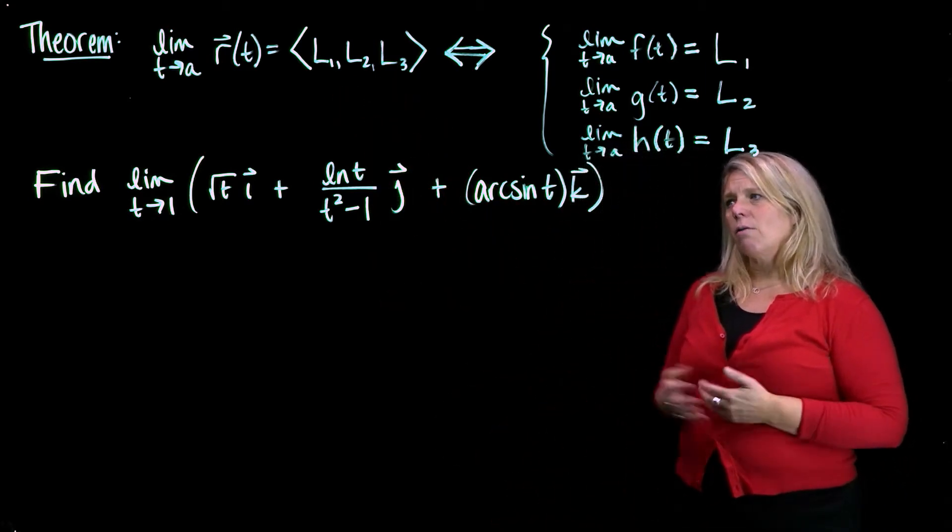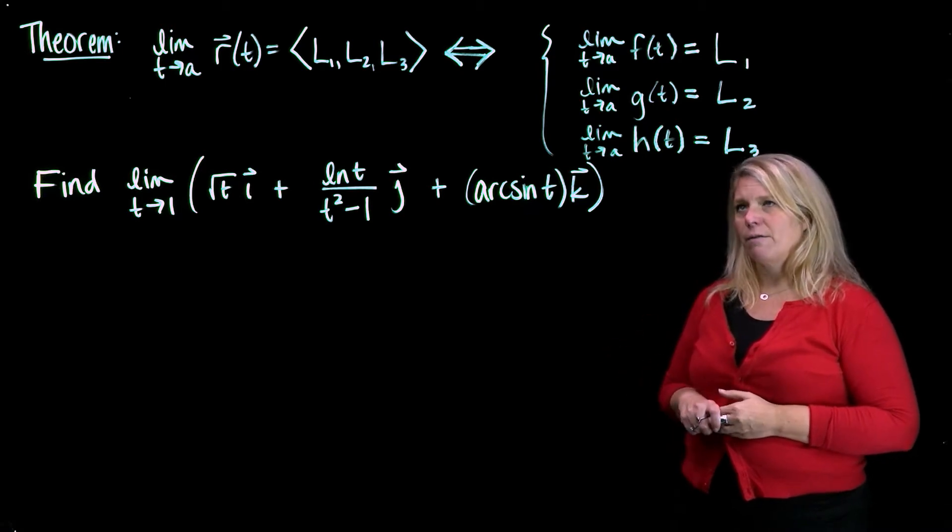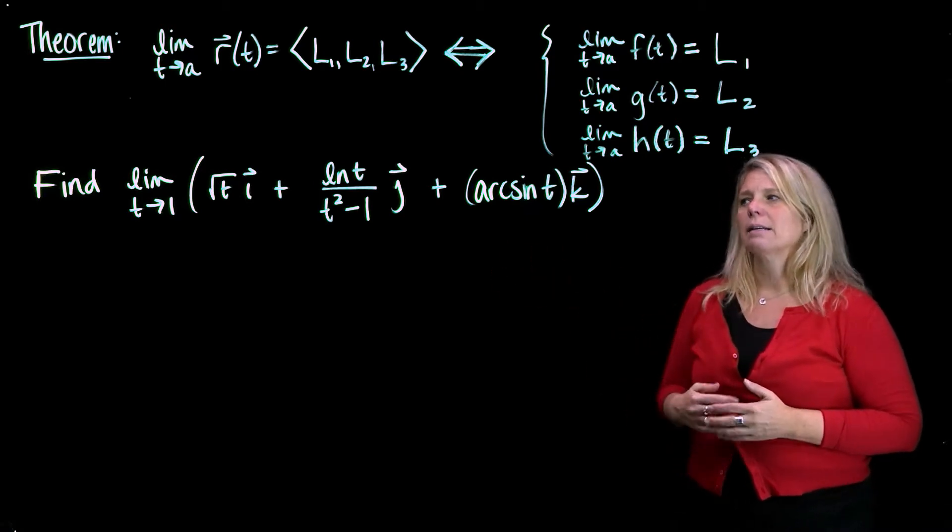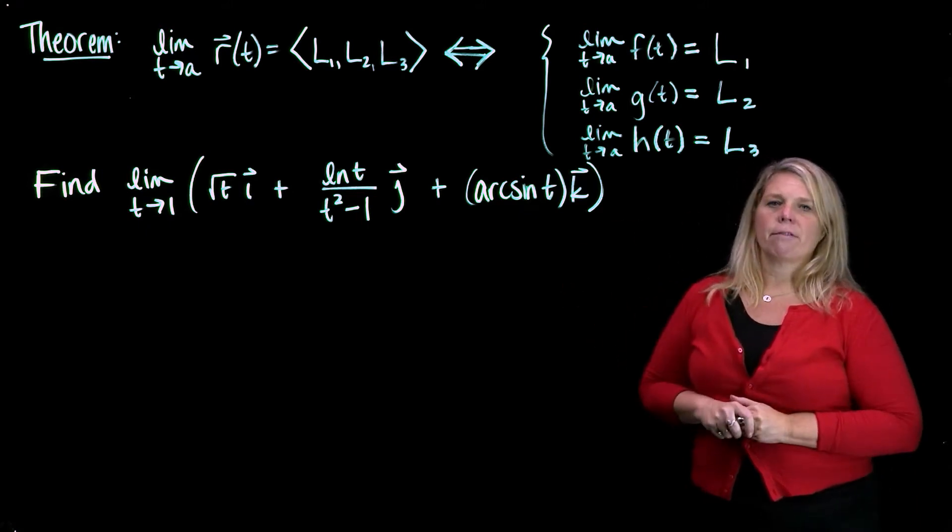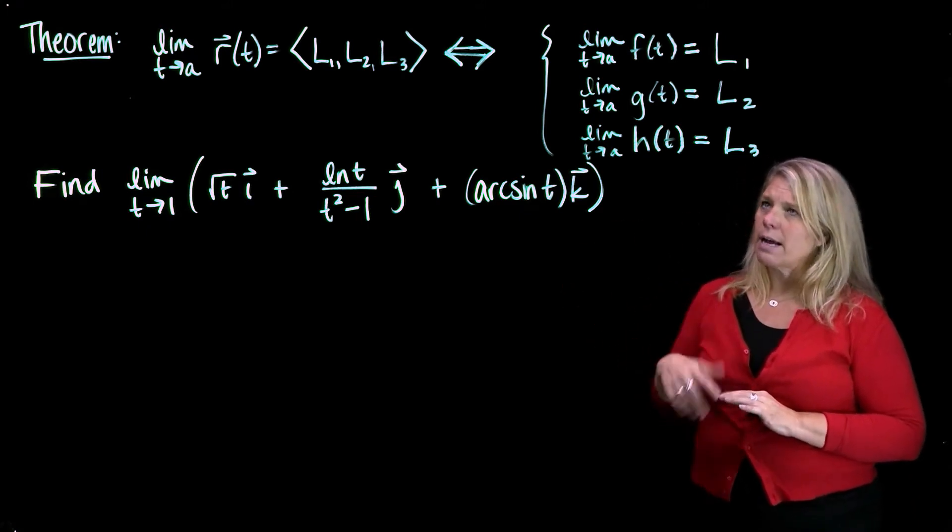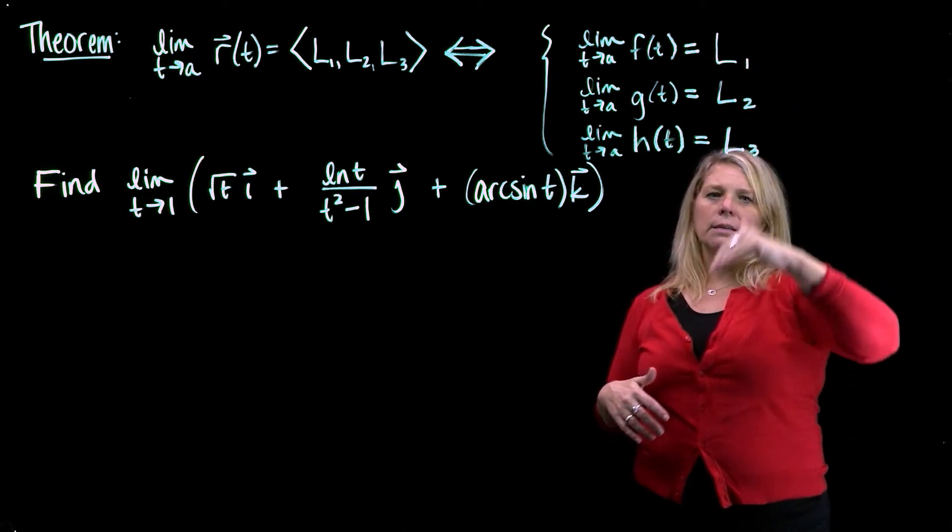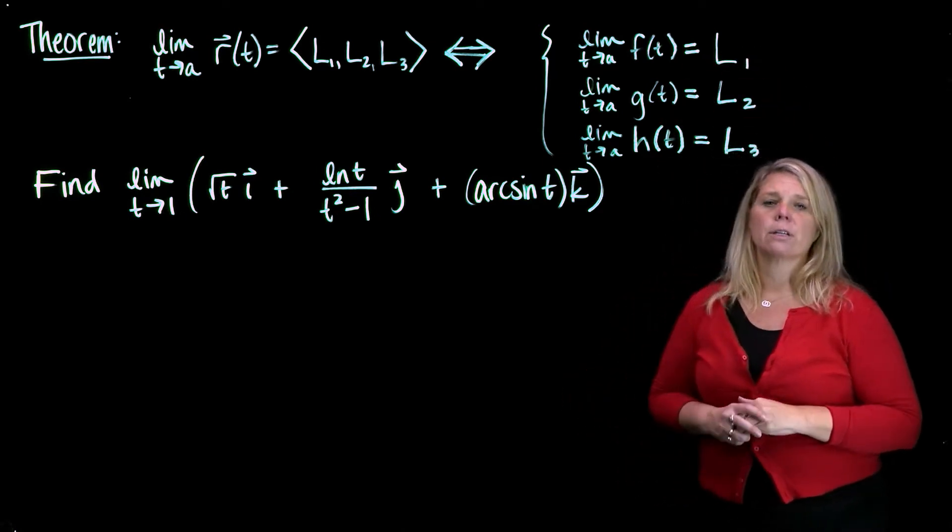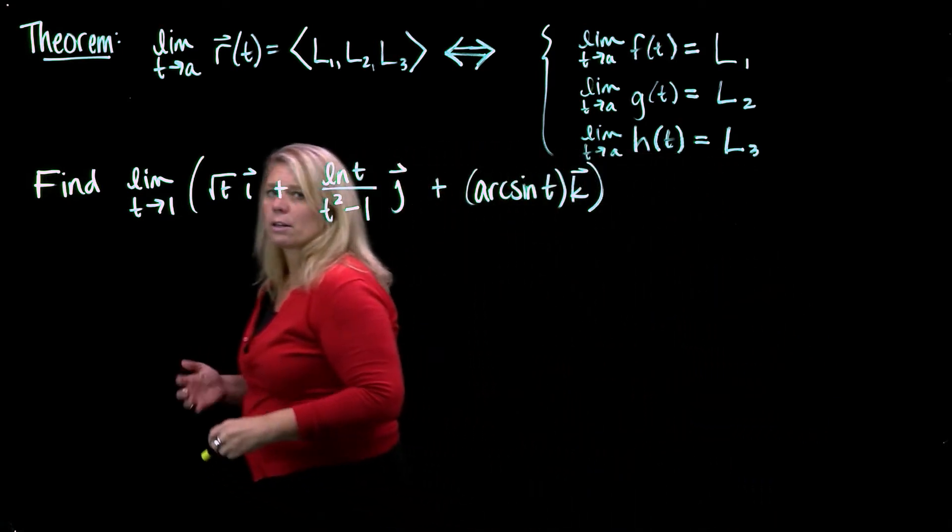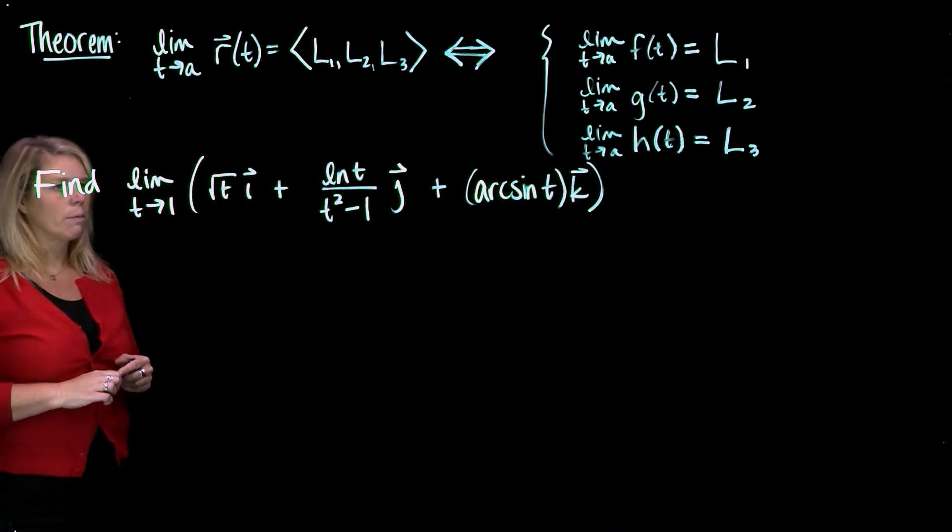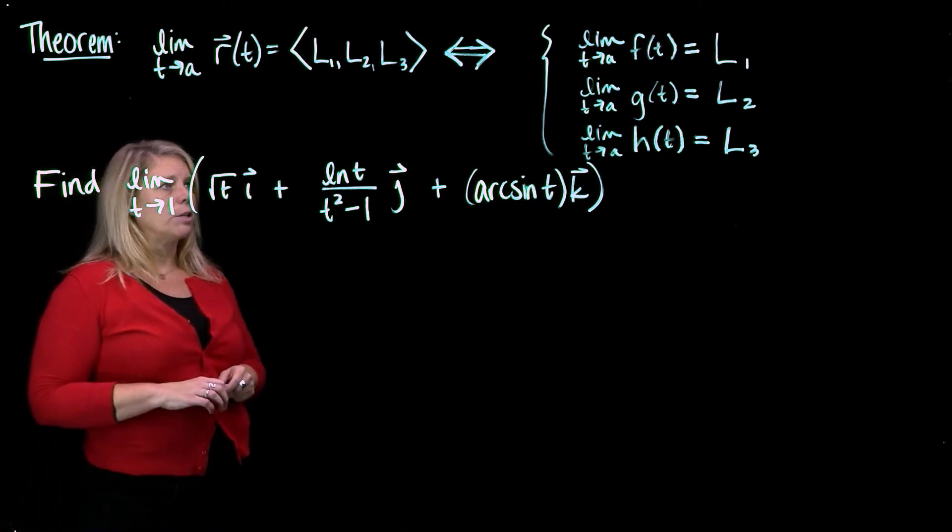Okay, so we're supposed to find the limit of this vector-valued function. So what this theorem tells us is that rather than having to think about the limit of the whole vector-valued function, we can think about the limit of those individual component functions. So this becomes a problem sort of like you might have seen in Calculus 1 or 2, where you're working with limits of single variable functions.